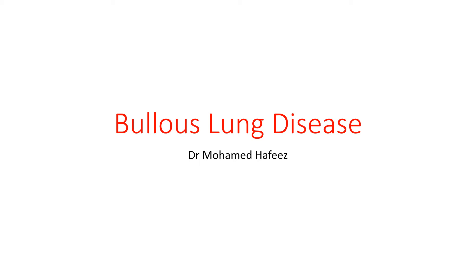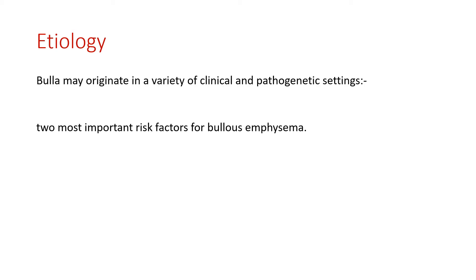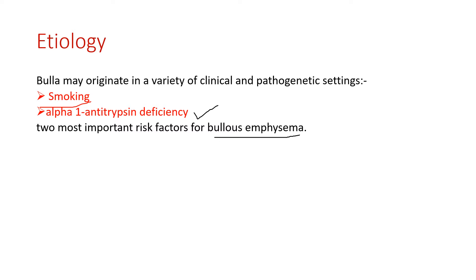Coming back to the etiology — if you haven't seen the introduction, go back to the previous slide to understand what bullous lung disease is. The most common etiology for bullous emphysema is smoking and alpha-1 antitrypsin deficiency. So two causes: smoking and alpha-1 antitrypsin deficiency for bullous emphysema conditions.